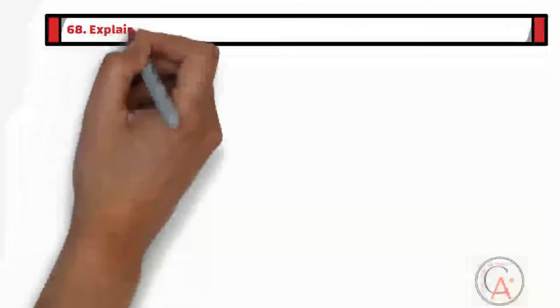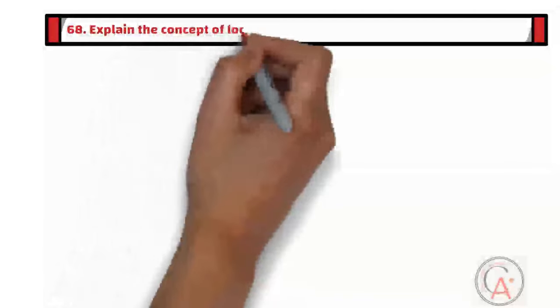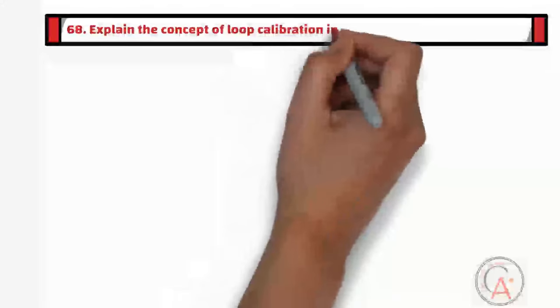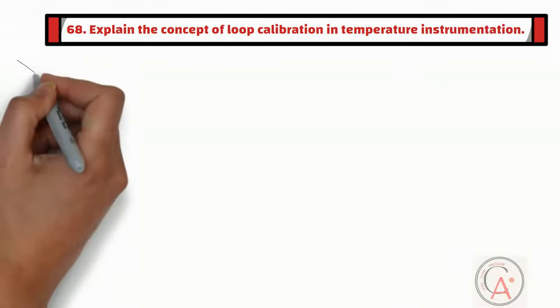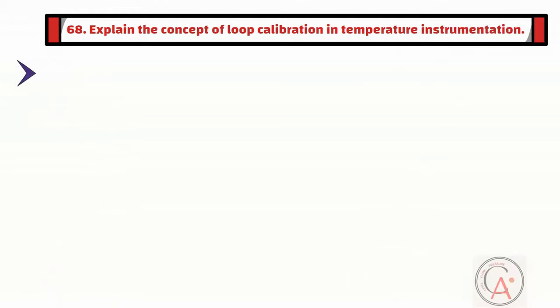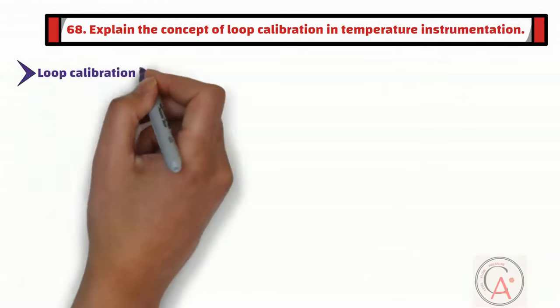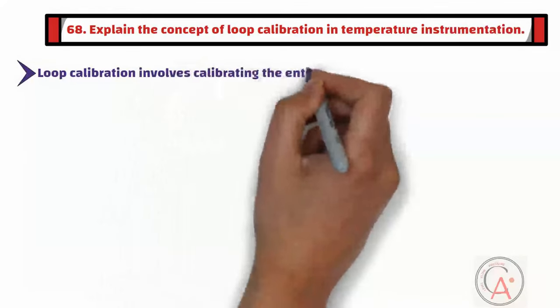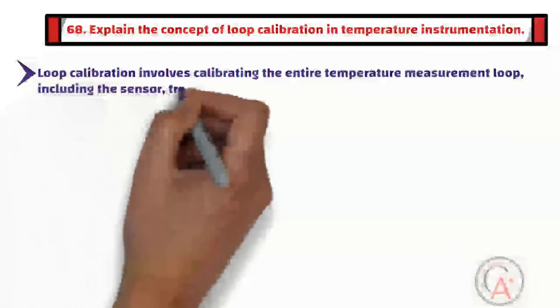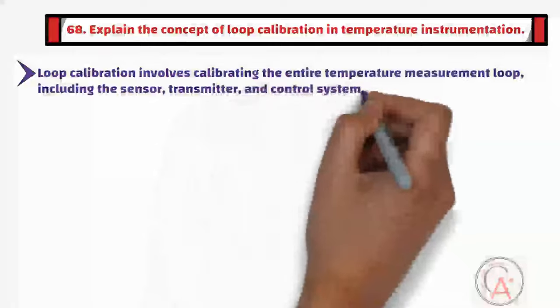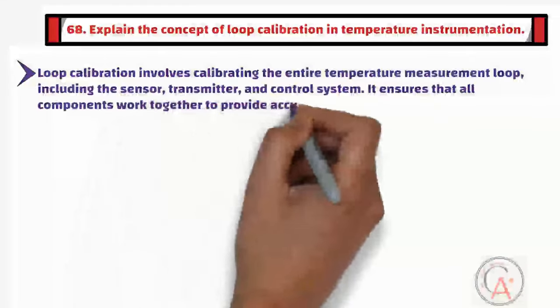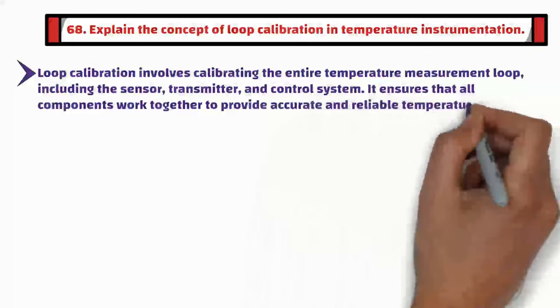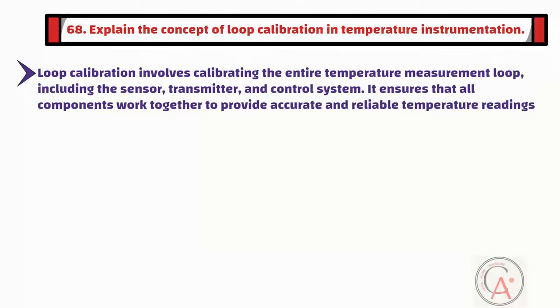Question sixty-eight is: explain the concept of loop calibration in temperature instrumentation. Loop calibration involves calibrating the entire temperature measurement loop, including the sensor, transmitter, and control system. It ensures that all components work together to provide accurate and reliable temperature readings.